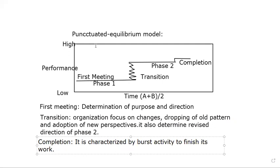This is the punctuated equilibrium model. The punctuated equilibrium model has three stages, while the normal group development model has five stages. These are the three stages: first meeting, transition, and completion. Performance is basically high in phase two and completion stage, and low at the first stage.